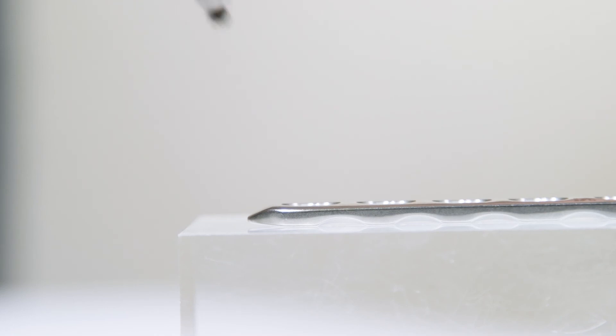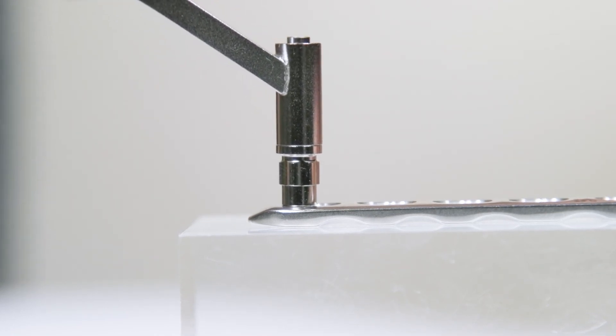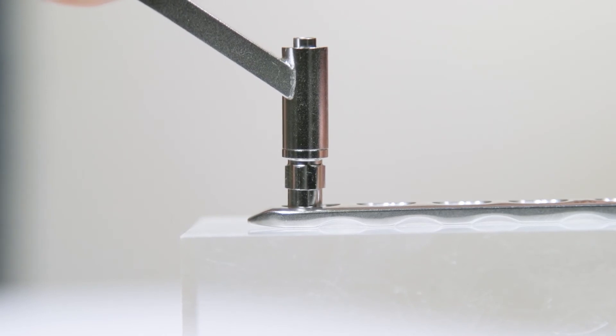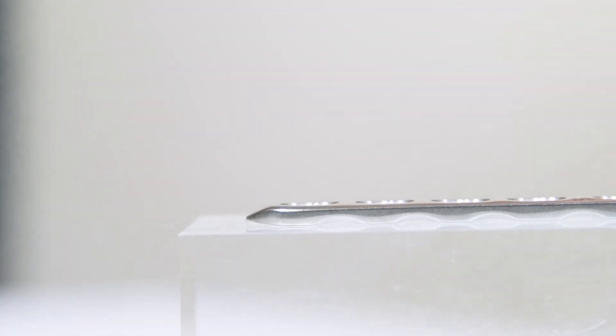To achieve neutral positioning of the pilot hole, the device is placed into the plate hole and pressure is applied to the spring-loaded tip. This achieves central positioning for the pilot hole.